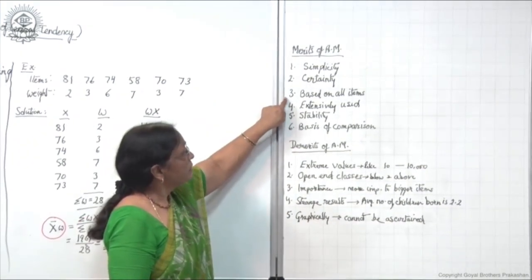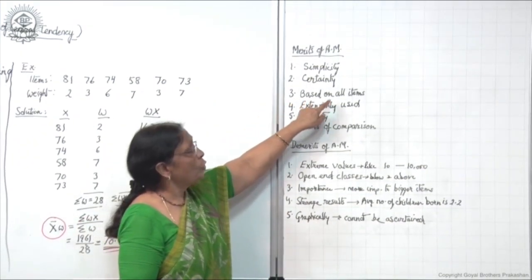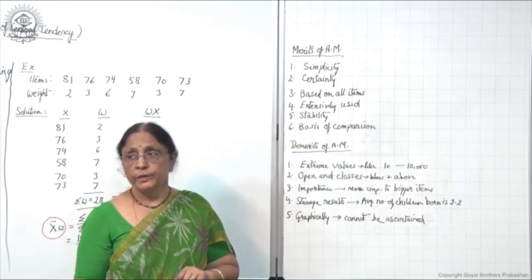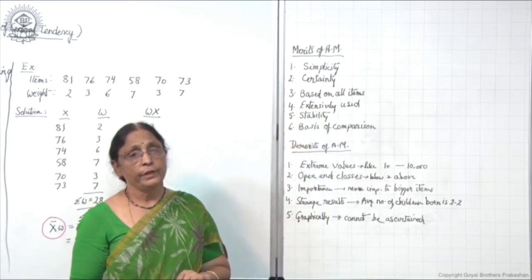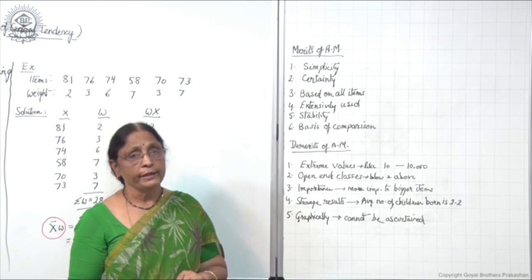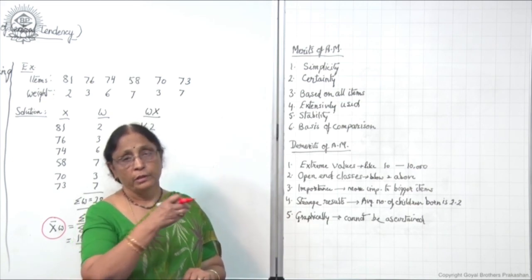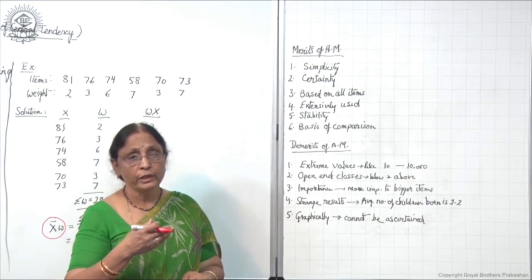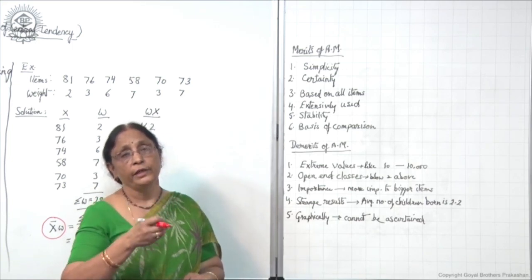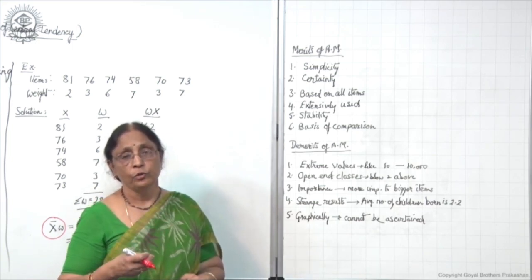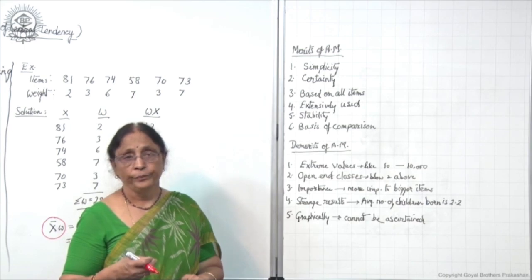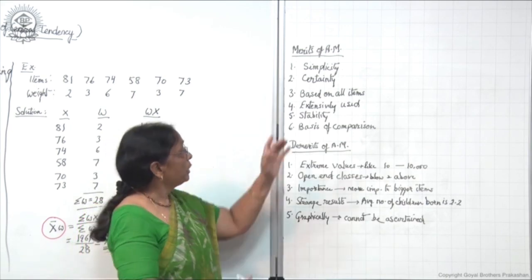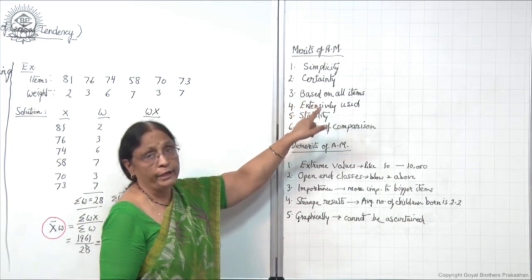The third merit is that it is based on all items. This means that arithmetic mean is based on all items, because when you have done the calculation, you must have noticed that each and every item is taken into consideration. So all the items are included.